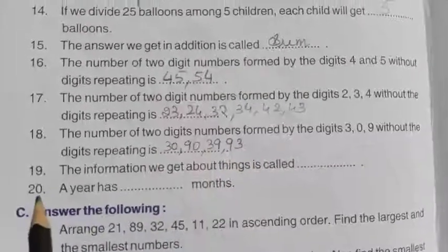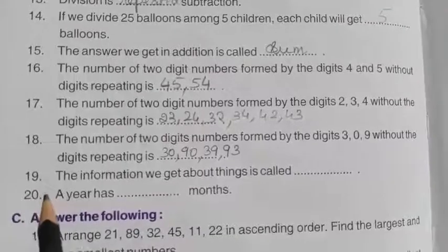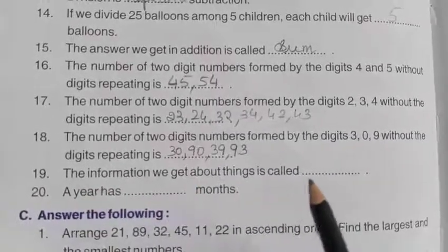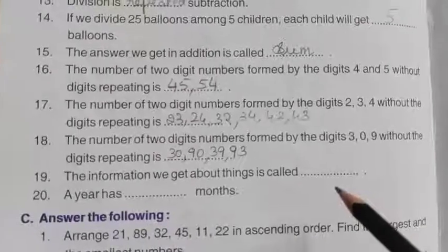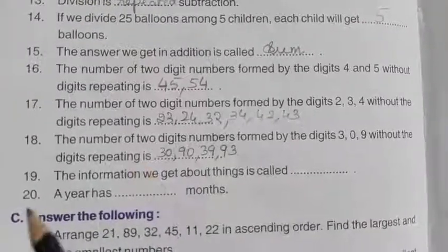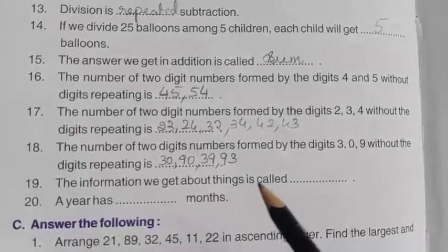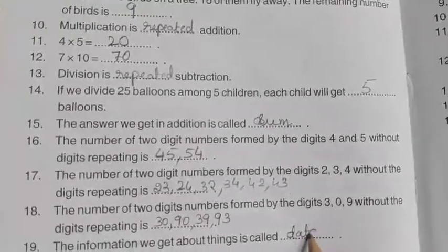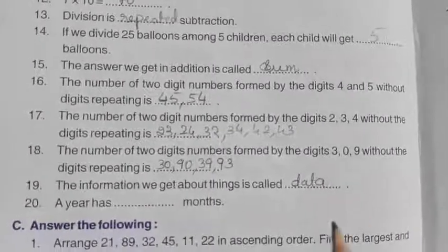Okay yes, now come to question number 19. Okay, the information we get about things is called dash. So this also we have learnt, isn't it? The information we get about things is called yes, data. D-A-T-A, data. Yes or no? Yes.